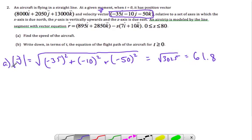Now write down in terms of t the equation of the flight path. Well, if currently the aircraft is at this location and it's going in this direction at that speed, then we can make an equation of a line.